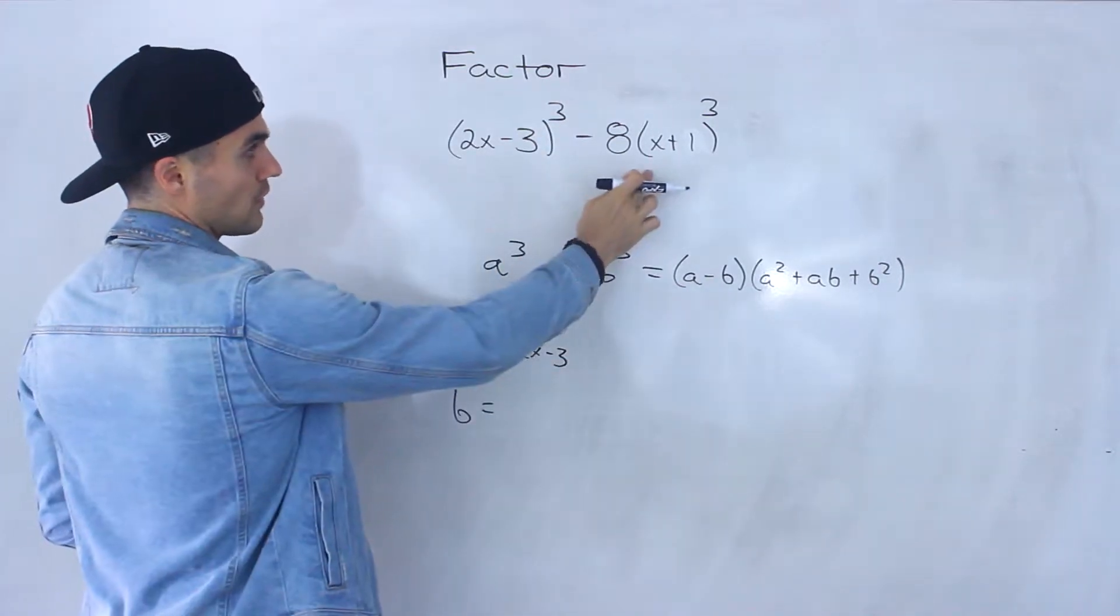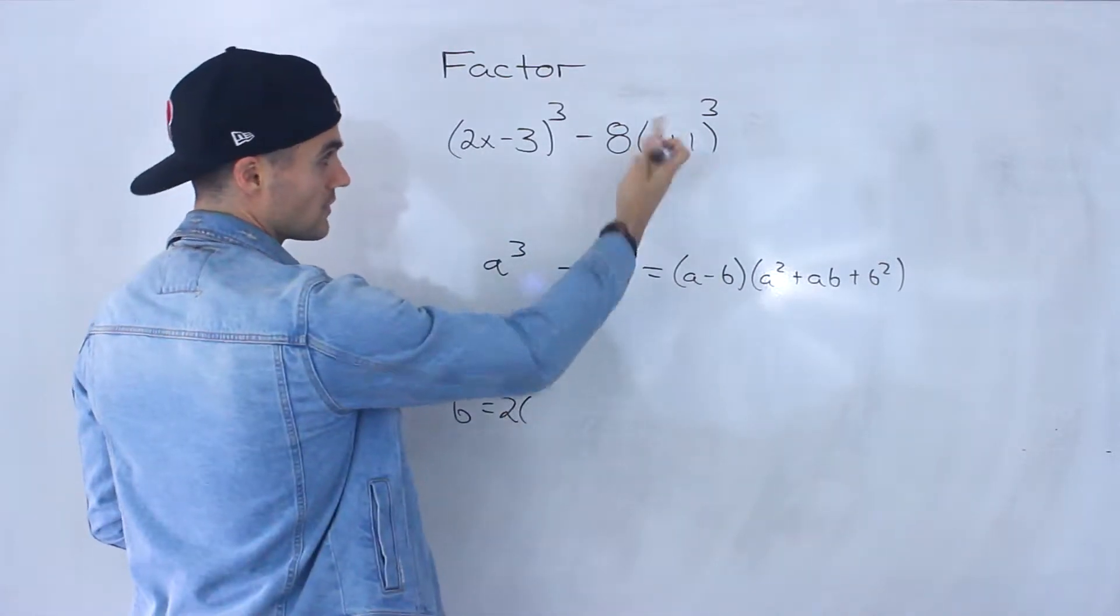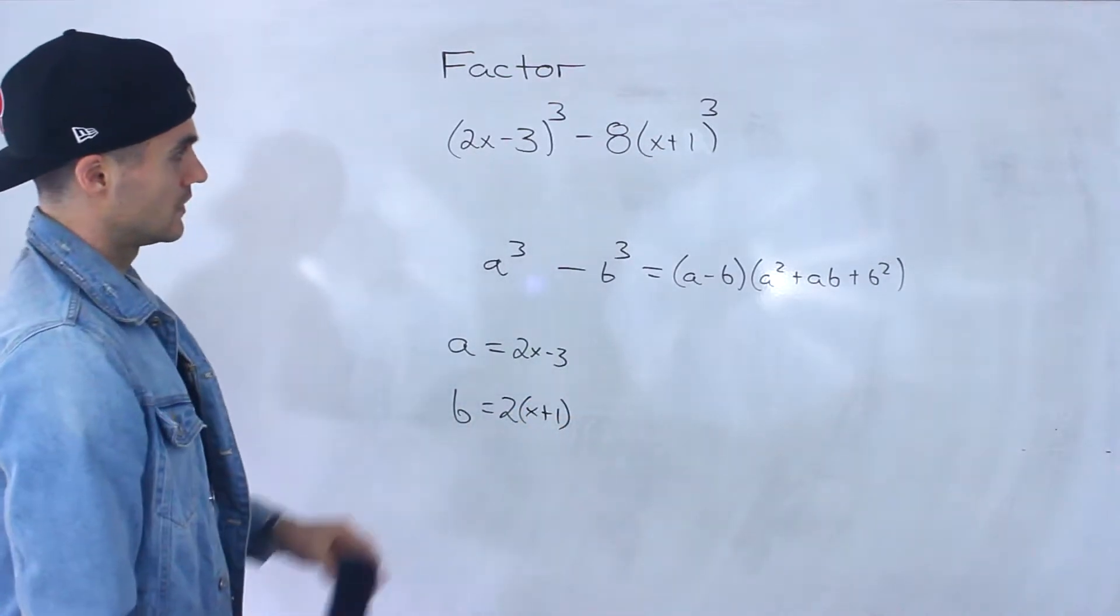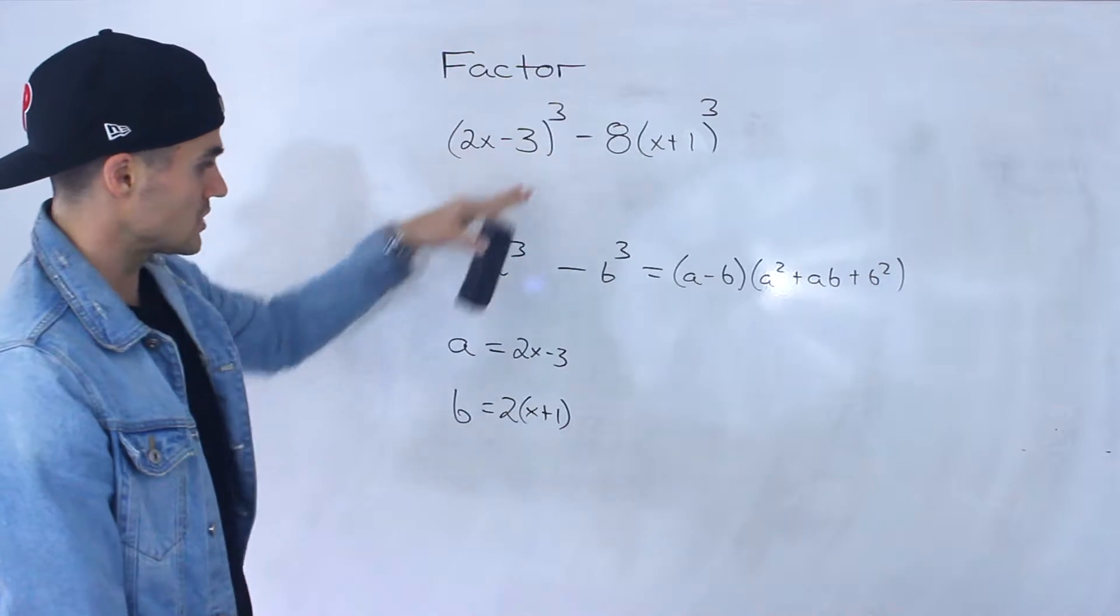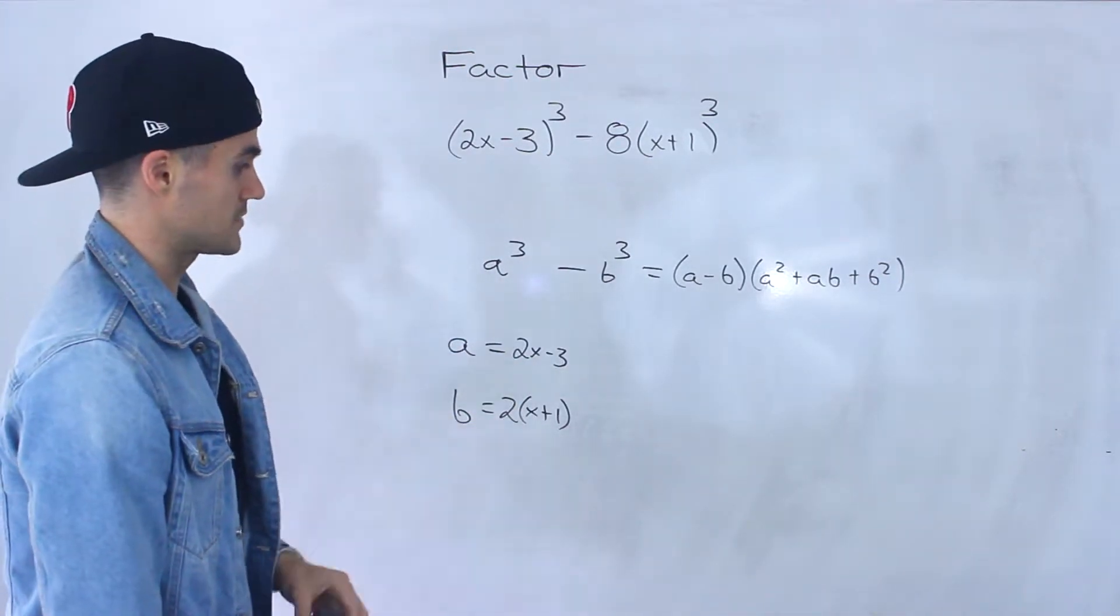And what's the third root of this? We got to take the third root of 8, which is 2, and then the third root of this bracket, which is just x+1. So from this expression, our a value is this, our b value is that, 2 times (x+1).